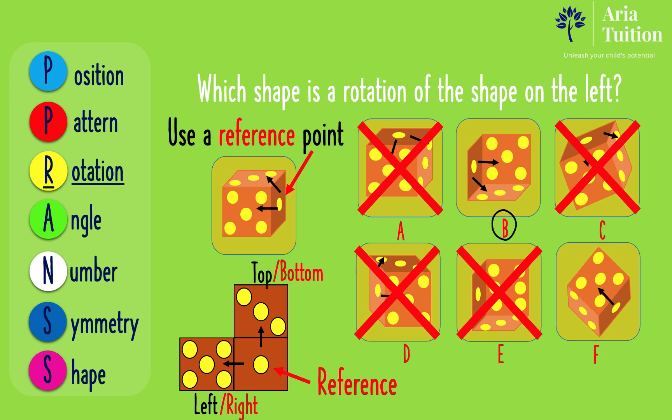In option F, five dots are to the right and three dots are on top of the one dot. Therefore, as five are to the right and three are on top, option F is not the correct answer.